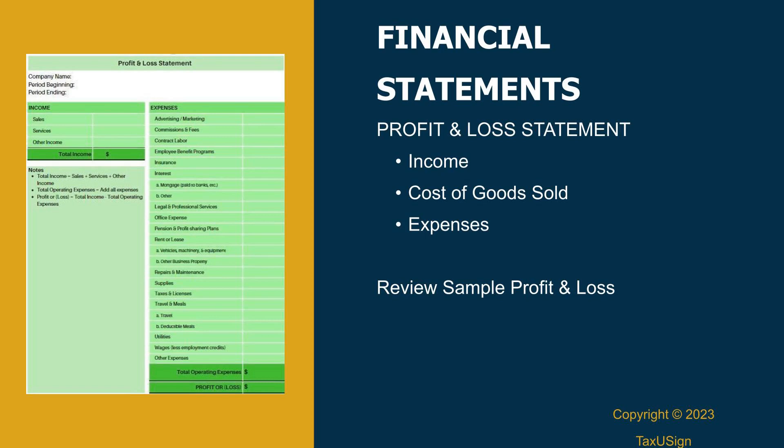More common profit and loss mistakes: costs of goods sold are for products that have sold — you would move the inventory to cost of goods sold. For example, if you purchase a book for $5 and sell it for $10 plus tax, then the $10 is categorized as retail sales, the $5 as cost of goods sold — meaning you made $5 profit. The sales tax is categorized as a liability account.